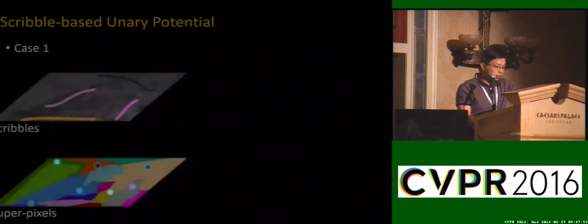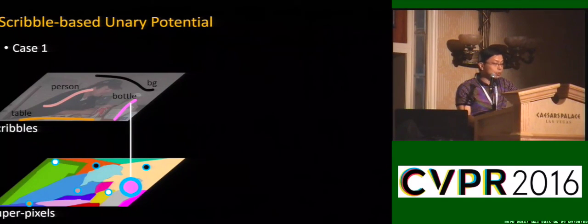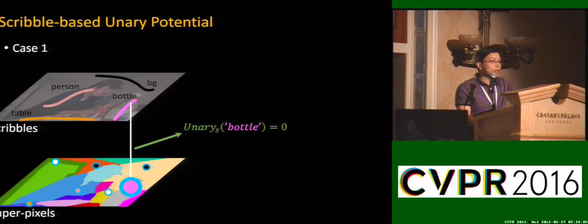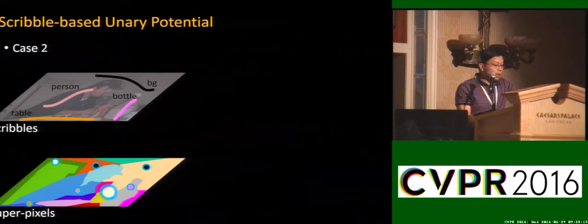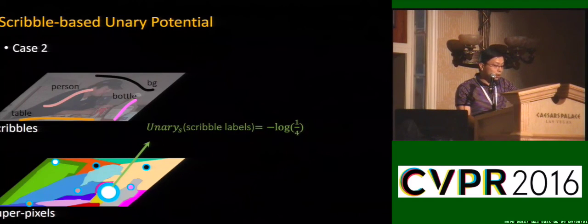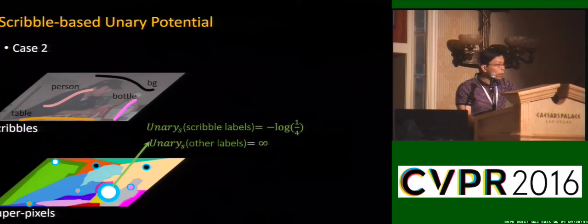The first is the scribble-based unary potential. When a superpixel overlaps with a scribble, it gets zero cost when assigned the label of that scribble, such as the label 'bottle.' Assigning other labels to this superpixel becomes impossible because we impose a very large penalty. When the superpixel is not intersecting with any scribble, there is no preference, so we assign equal cost to all labels given by the scribbles. If a superpixel intersects with multiple scribbles, we handle it accordingly.